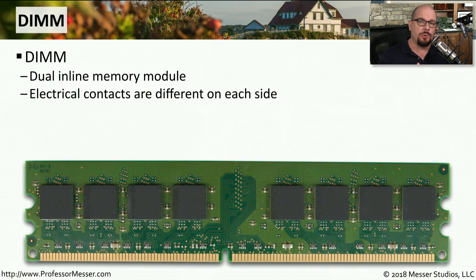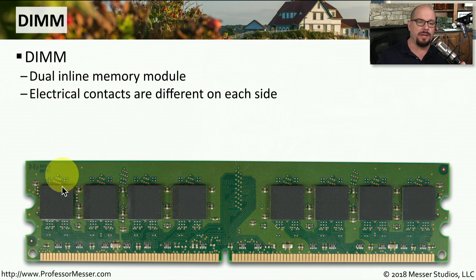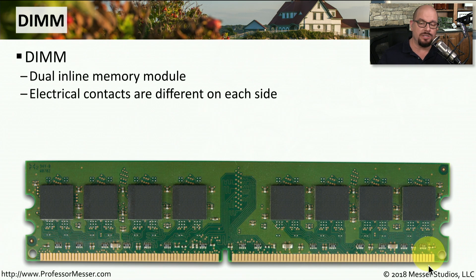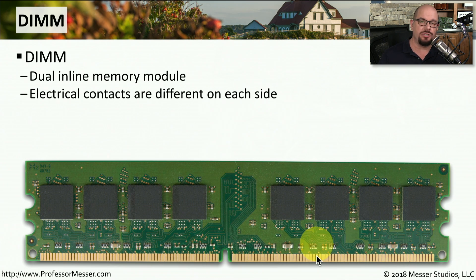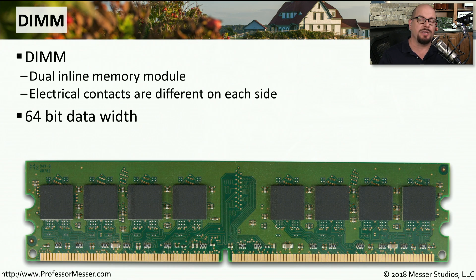The type of physical package that installs into those slots on your motherboard is a DIMM — a dual inline memory module. It's called a dual inline memory module because this memory module has a series of contacts on one side, another set of contacts on the other side, and those two contacts are different on each side of that memory module. These dual inline memory modules have a 64-bit data width, so we're able to transfer data from these memory modules in chunks of 64 bits at a time.